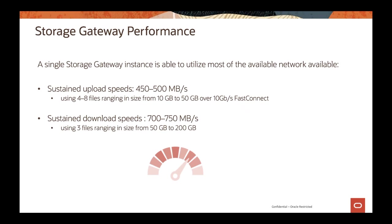Regarding storage gateway performance: it uses your internet connectivity, so performance depends on your available bandwidth. For example, with a 10 gigabits per second FastConnect connection and files ranging from 10 to 50 gigabytes, upload speed is approximately 450 to 500 megabytes per second and download is 700 to 750 megabytes per second. Storage gateway performs better with larger files than with many small files.